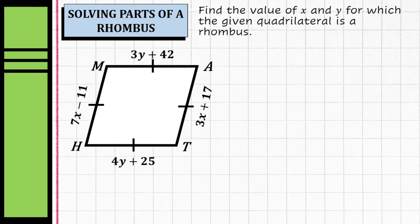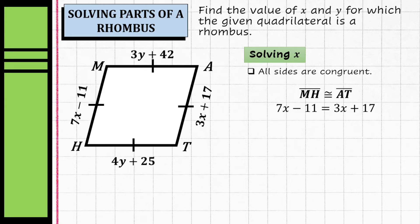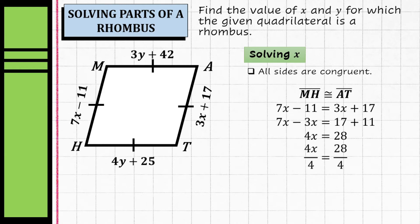Let's proceed to solving parts of a rhombus. Given a rhombus, we're going to solve for the value of x and y. To solve for x, we use the property that all sides are congruent, so segment MH is congruent to segment HT. Substituting: 7x minus 11 equals 3x plus 17. Rearranging: 4x equals 28, so x equals 7.